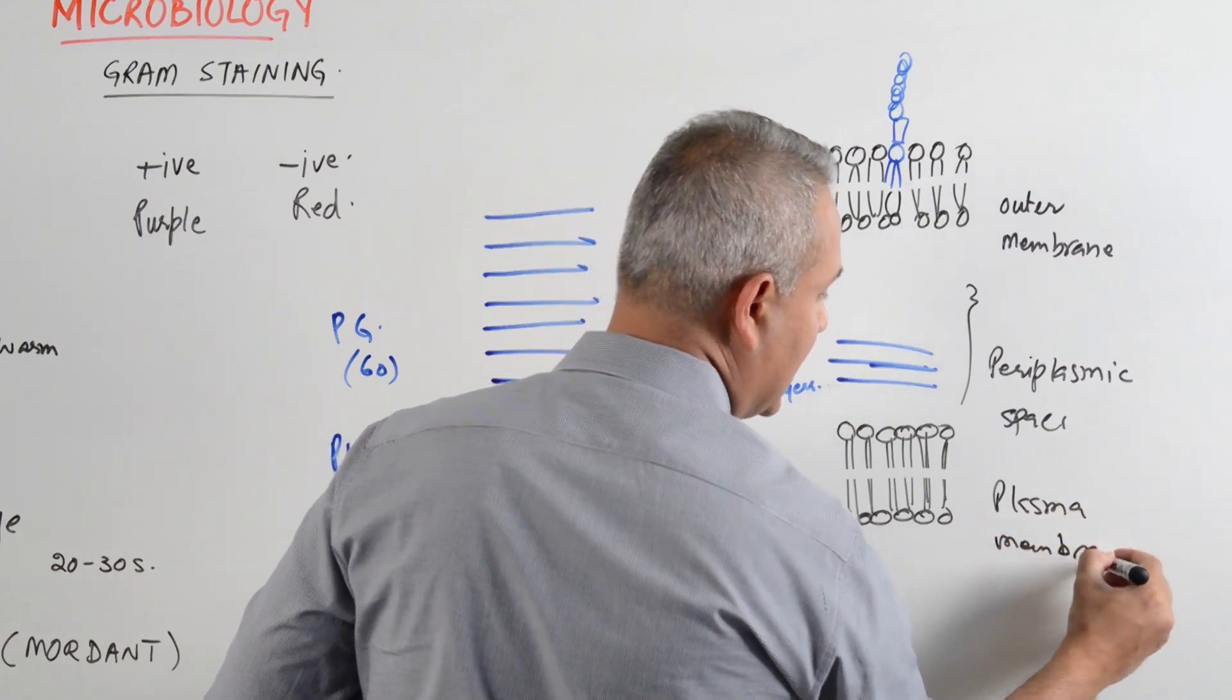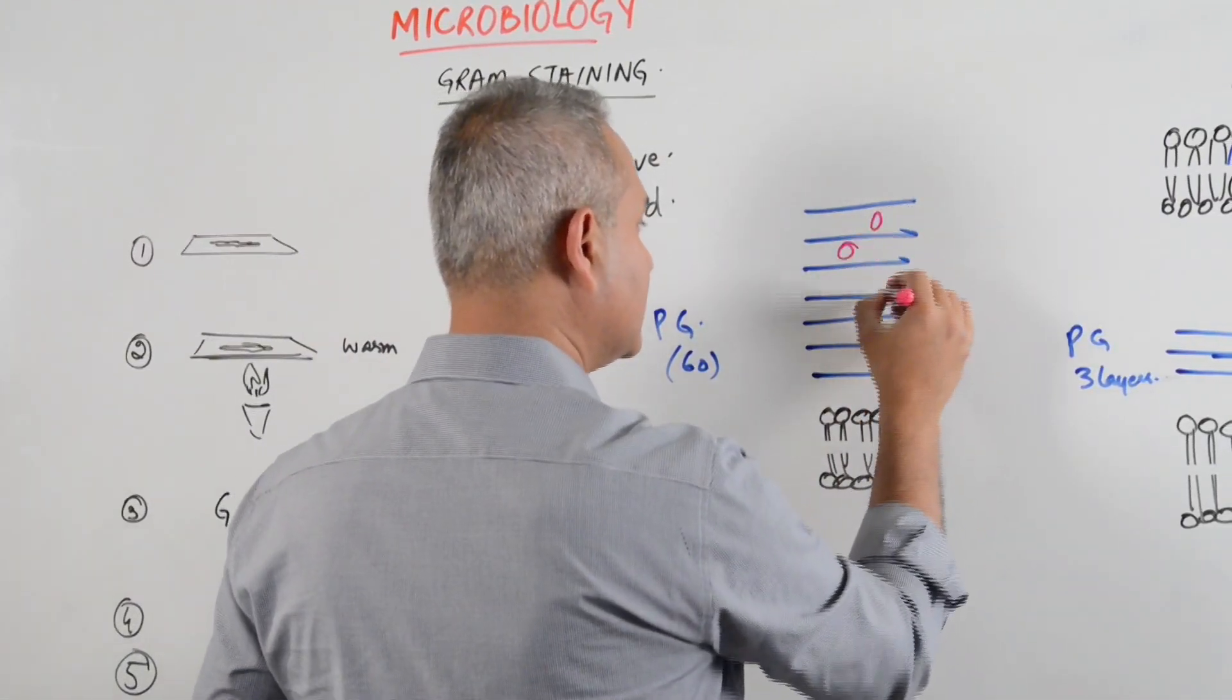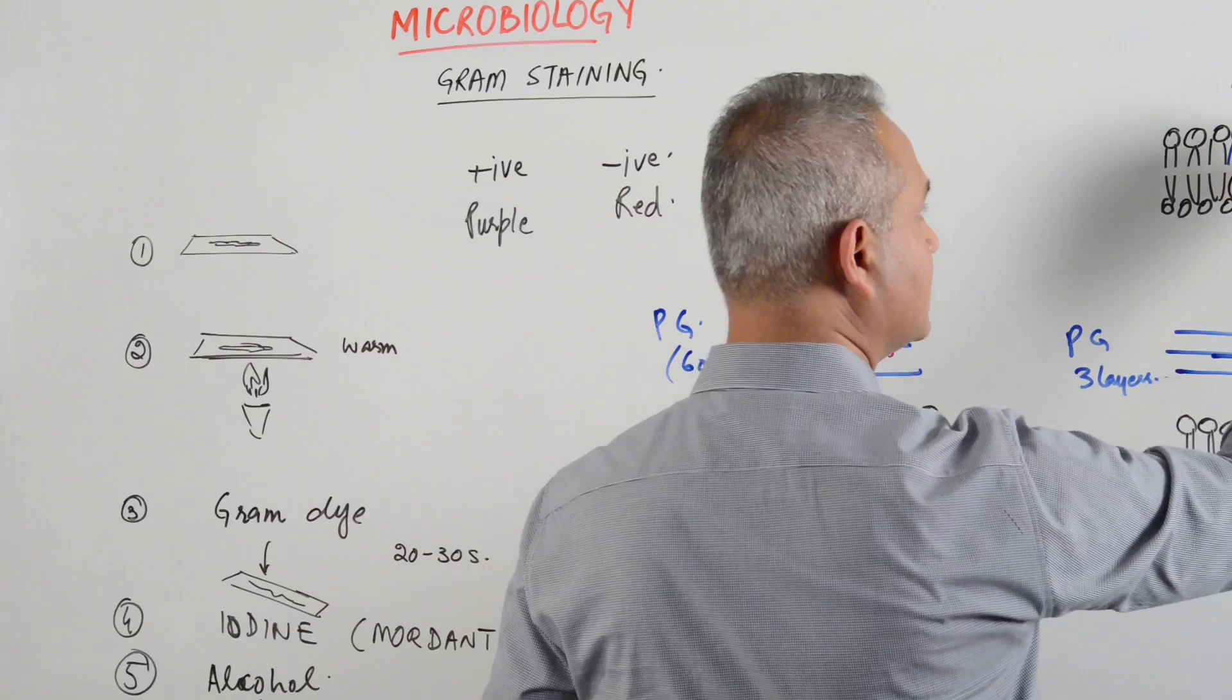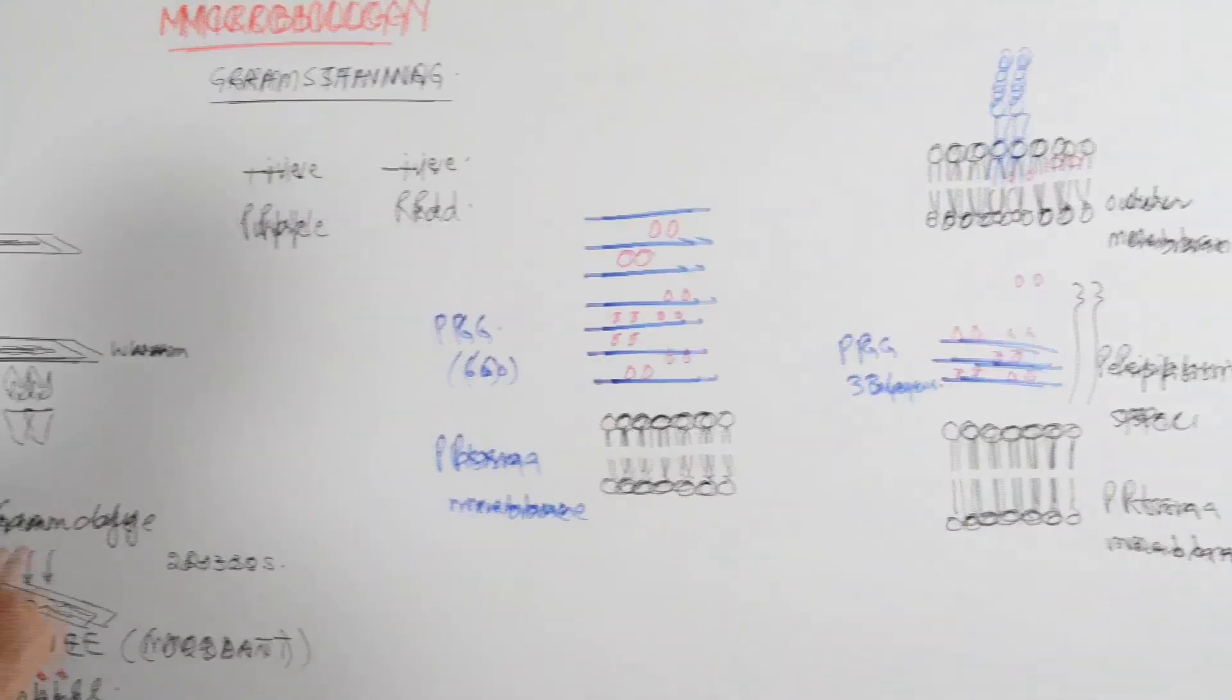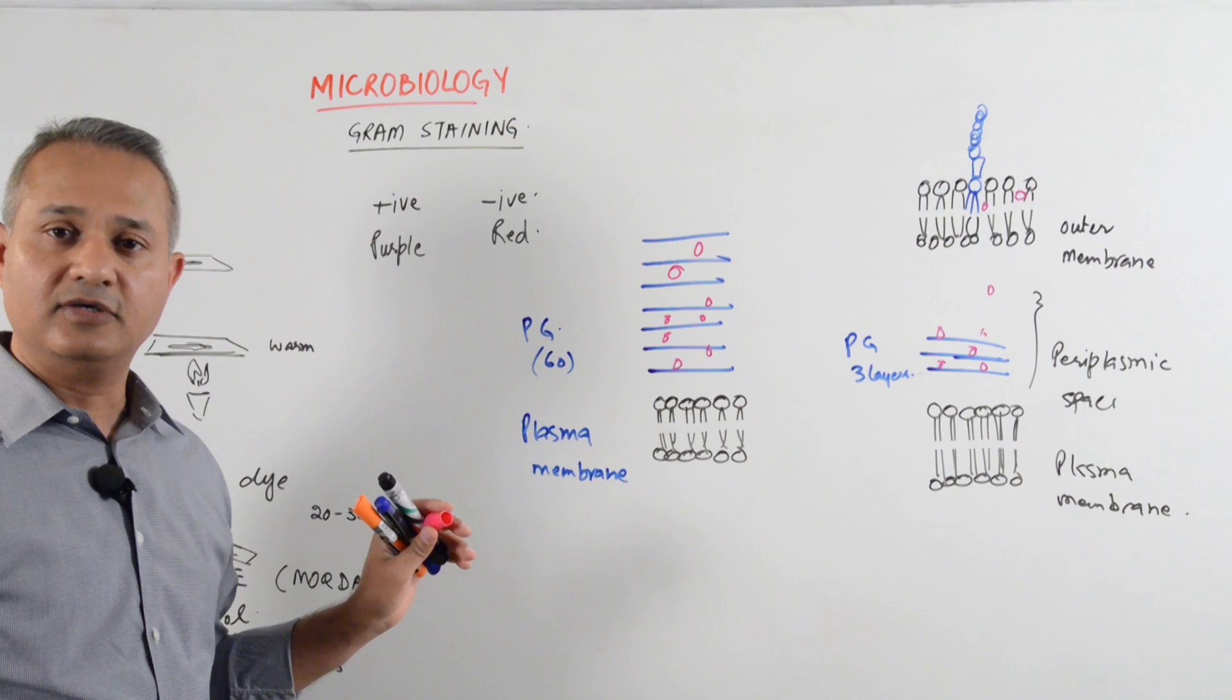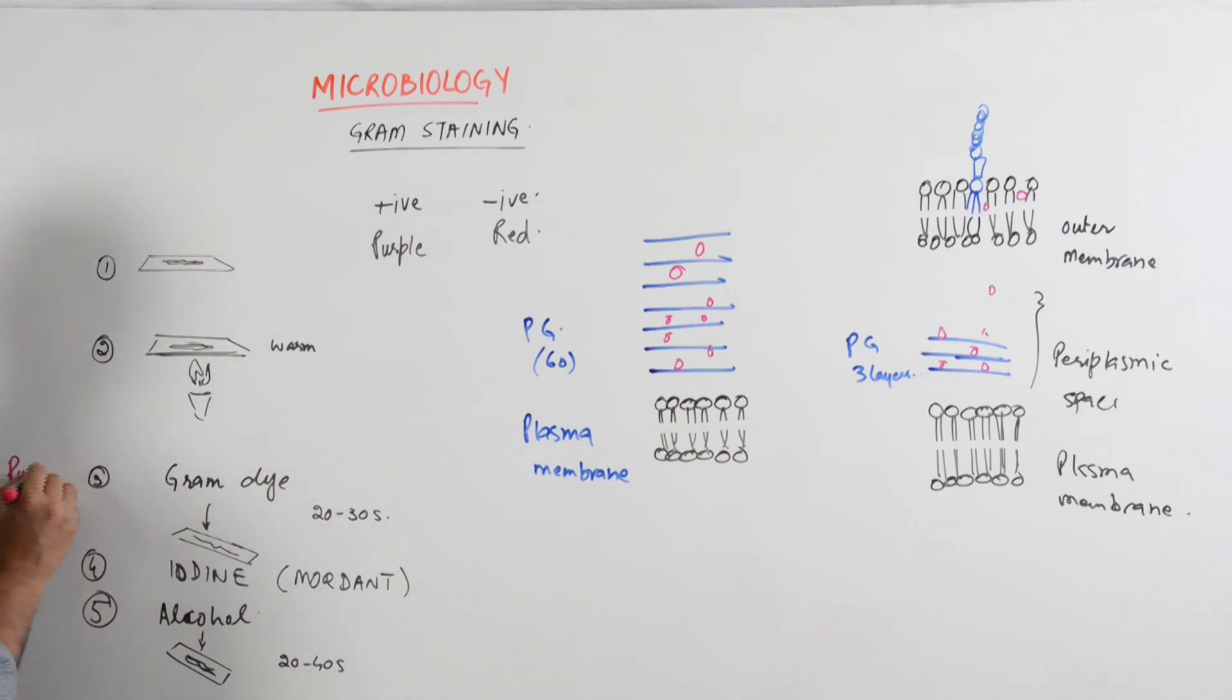Now the question is what happens with the Gram stain. When you put the Gram's dye, the dye is small molecules. These molecules come and get trapped into the peptidoglycan layer. Here the molecules are going to get trapped here and then finally they will fall here and they will also be in the peptidoglycan. So at this point after putting the Gram dye on the Gram positive or negative, if you see through the microscope they both would look purple. So there is no difference of the positive or negative, they both are purple at this stage.